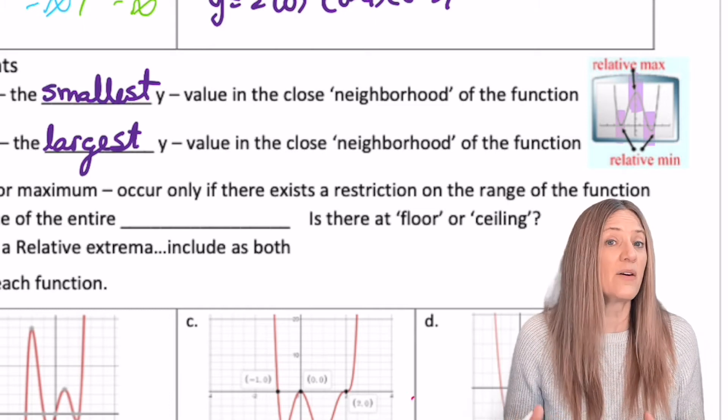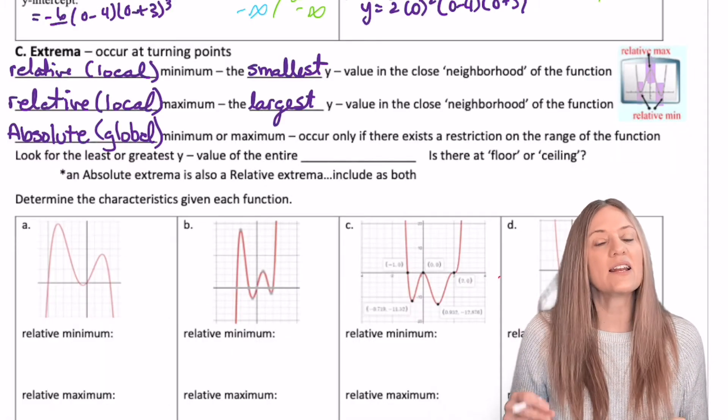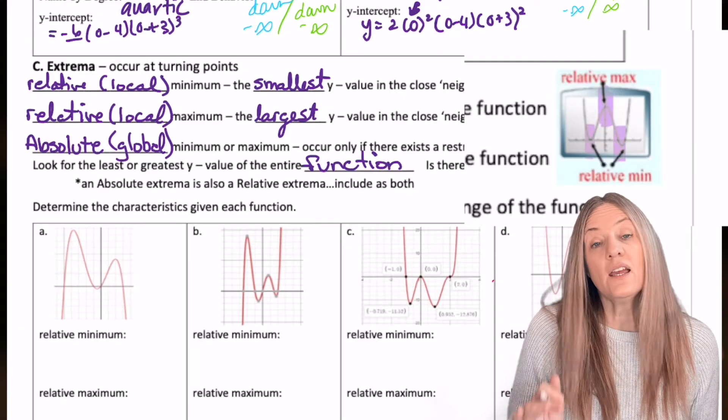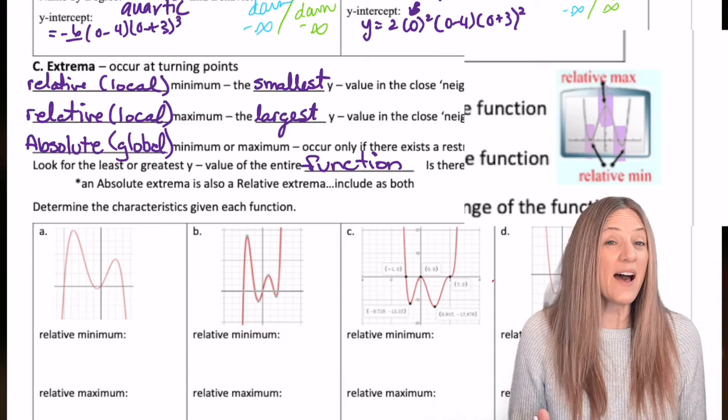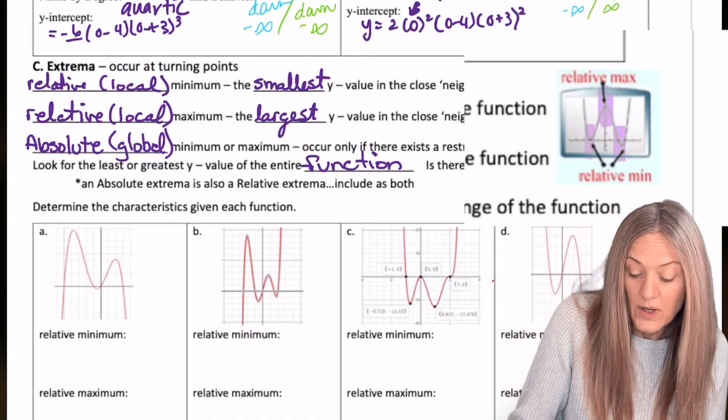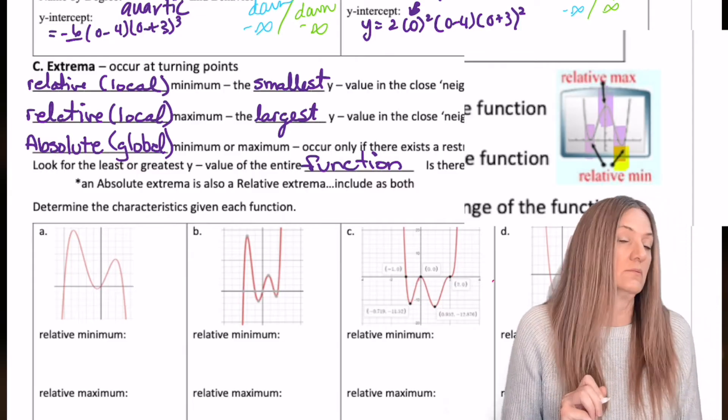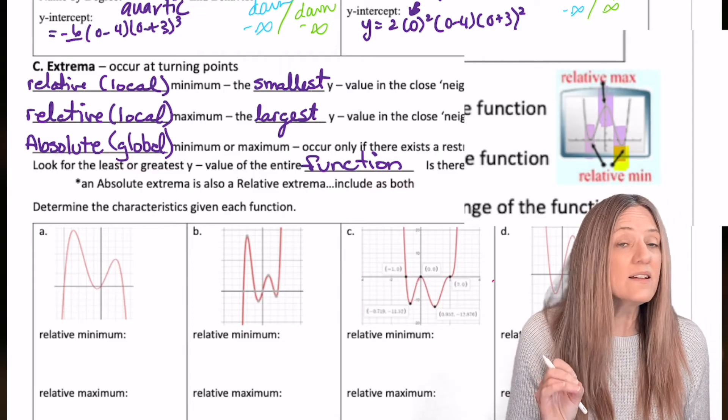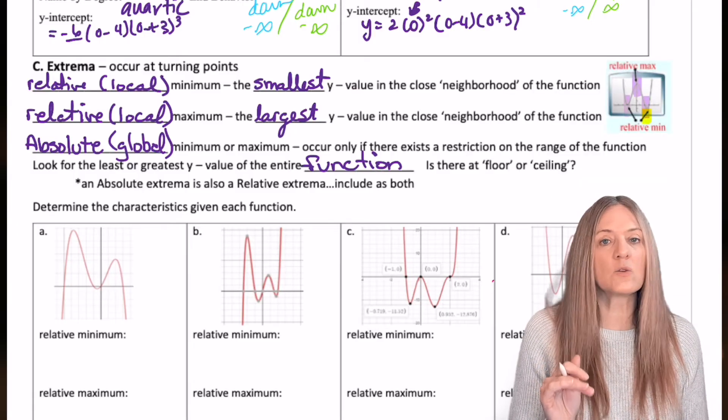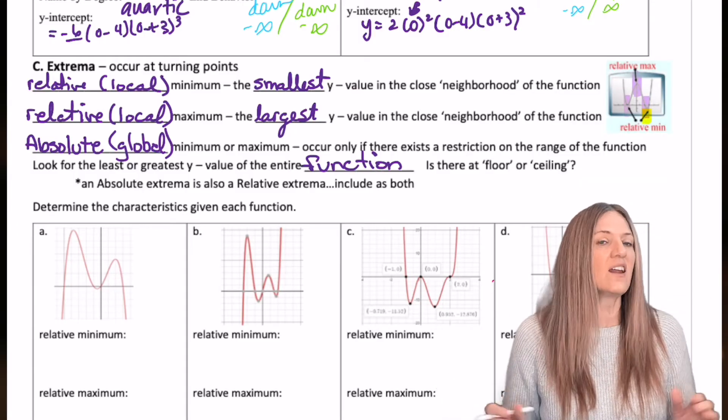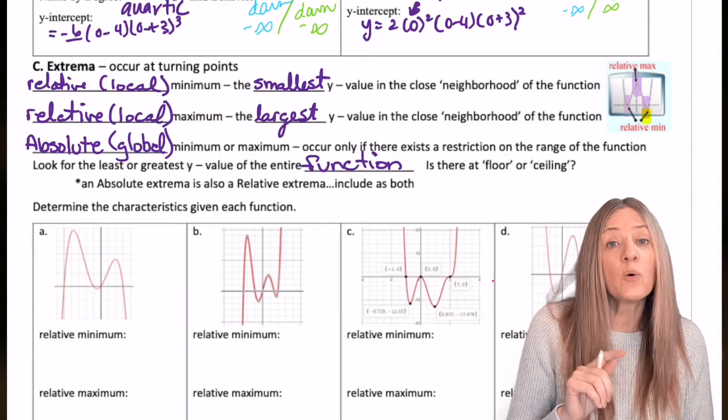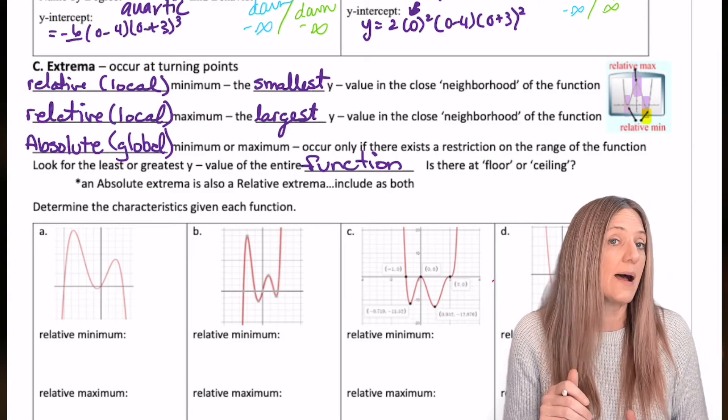But now let's talk about an absolute min or max. An absolute min or max might be called a global. What happens is, in the graph, we see that we happen to have a floor. What I mean by that is nothing goes below this value. So not only is that a relative min, it happens to be the absolute min. It's the smallest y value of the whole function, and it's the smallest y value in the nearest vicinity. Be sure and include it in both lists for relative and absolute.